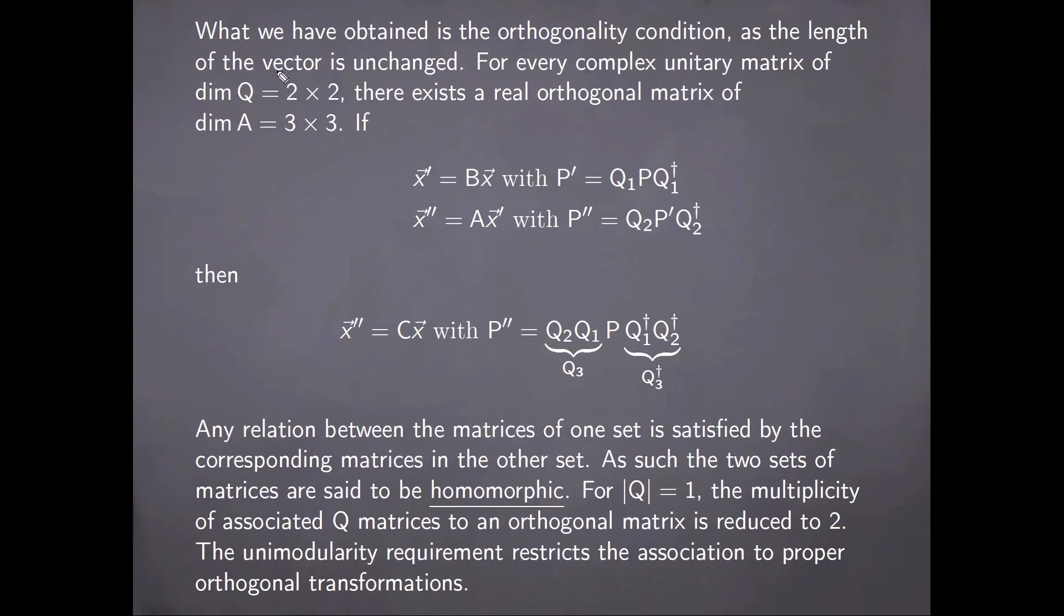Therefore, what we have obtained is precisely the orthogonal condition, as the length of the vector remains unchanged. As such, for every complex unitary matrix of dimension 2 times 2, there exists a real orthogonal matrix of dimension 3 times 3.